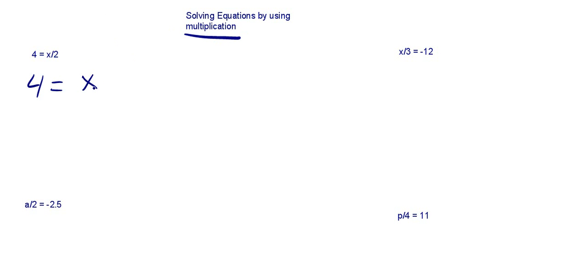We got 4 is equal to x divided by some number... I'm sorry, 4 is equal to some number divided by 2, that's going to equal 4.